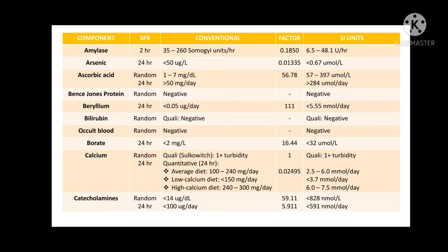For catecholamines, when you use random urine samples, expect less than 14 micrograms per deciliter. When you use a 24-hour urine sample, that's less than 100 micrograms per day. Take note of the difference between their conversion factors: for random samples, use 59.11, but if you use 24 hours, your conversion factor shifts one decimal to the left, so that's 5.911.